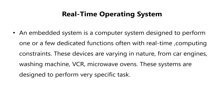Next is the real-time operating system. An embedded system is a computer system designed to perform one or a few dedicated functions, often with real-time computing constraints. These devices vary in nature from car engines to washing machines, VCR, microwave. These systems are designed to perform very specific and primitive tasks, and therefore the operating system provides limited features. Very little user interface is provided. A sensor gives input to the computer, the computer analyses data and adjusts controls to modify the sensor inputs. A real-time system has well-defined fixed time constraints and works correctly only if it returns the correct output within its time span.